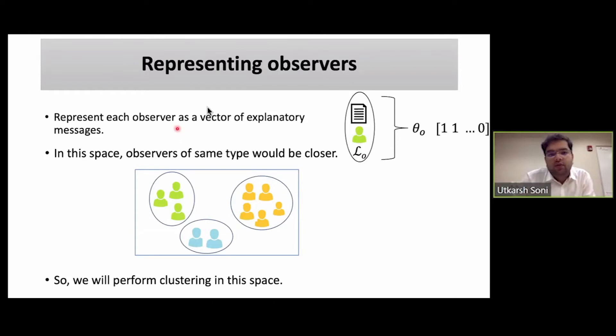To solve that, what we do is we represent each observer as a vector of explanatory messages. Each observer is represented as a 0,1 vector where each bit corresponds to some explanatory message such that all the messages whose bit are 1 are the minimal set of messages that when given to this observer would make any transition appear explicable to them. When we project all the observers in this explanation space, what will happen is that observers from the same type would tend to be closer to each other. Hence, that is why we perform clustering in this particular space.